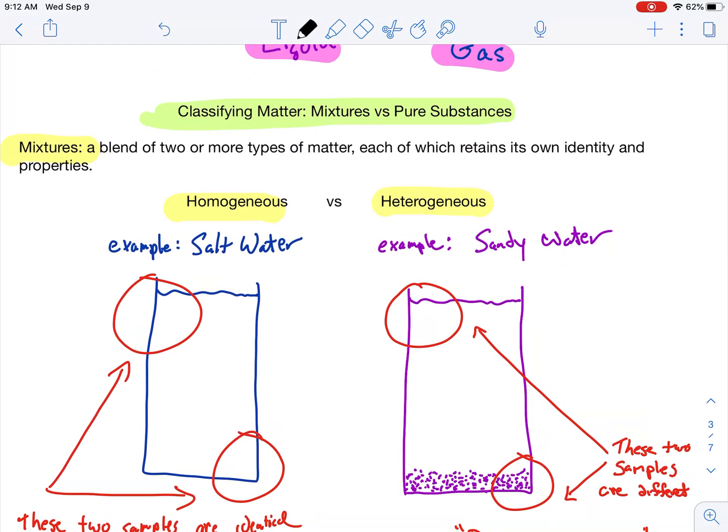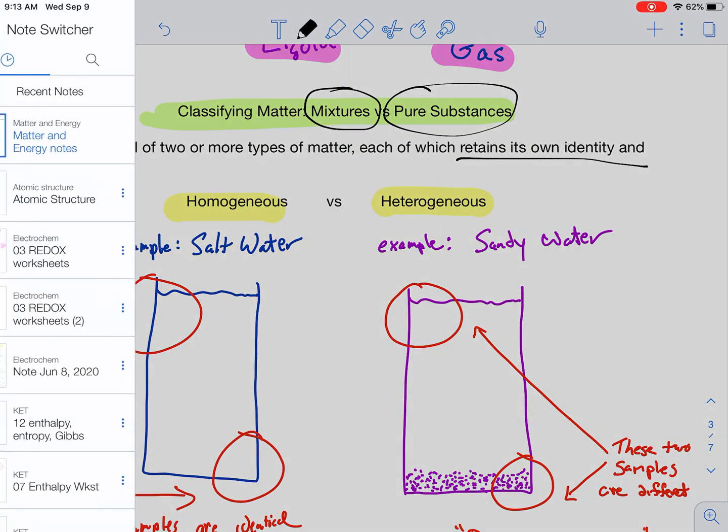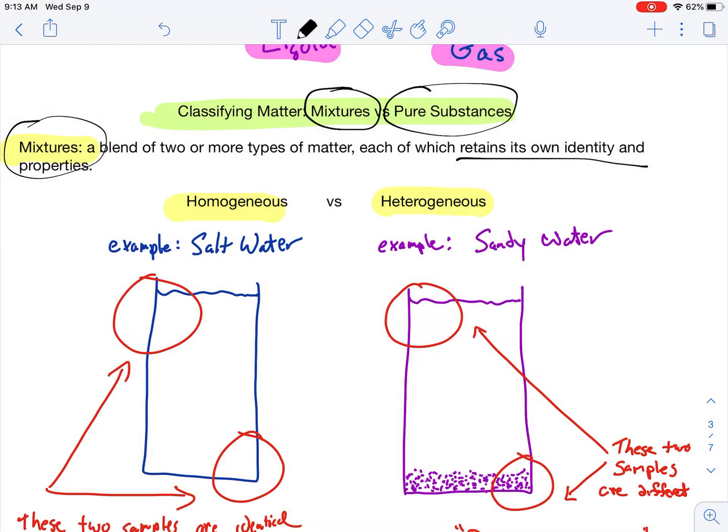So, we're going to classify matter. If I were to look at matter, I should be able to pick out whether I'm dealing with a mixture or a pure substance. We're going to deal with mixtures first. So, a mixture is a blend of two or more types of matter, each which retains its own identity and property. So, if I were to look at maybe some trail mix, and I have some peanuts, and I have some raisins, those peanuts and raisins are not chemically combined together. That would be a mixture because they still retain their own identity and properties.